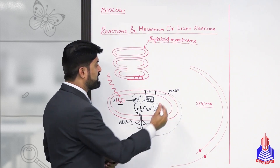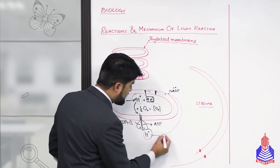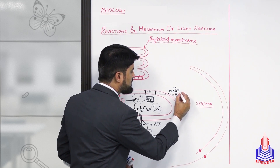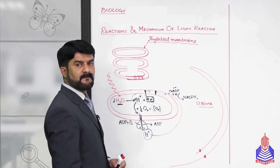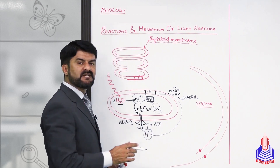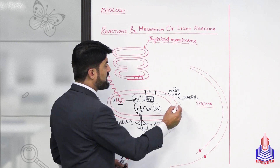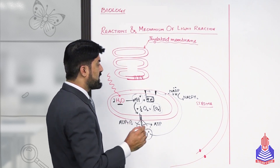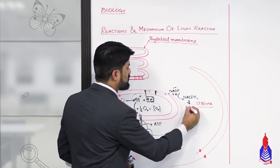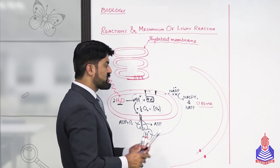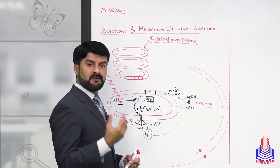NADP is negatively charged because it has received electrons. When hydrogen ions combine with negatively charged NADP, they form NADPH₂. NADPH₂ is a high-energy molecule, and ATP is also an energy-carrying molecule — both are capable of donating energy to other molecules.